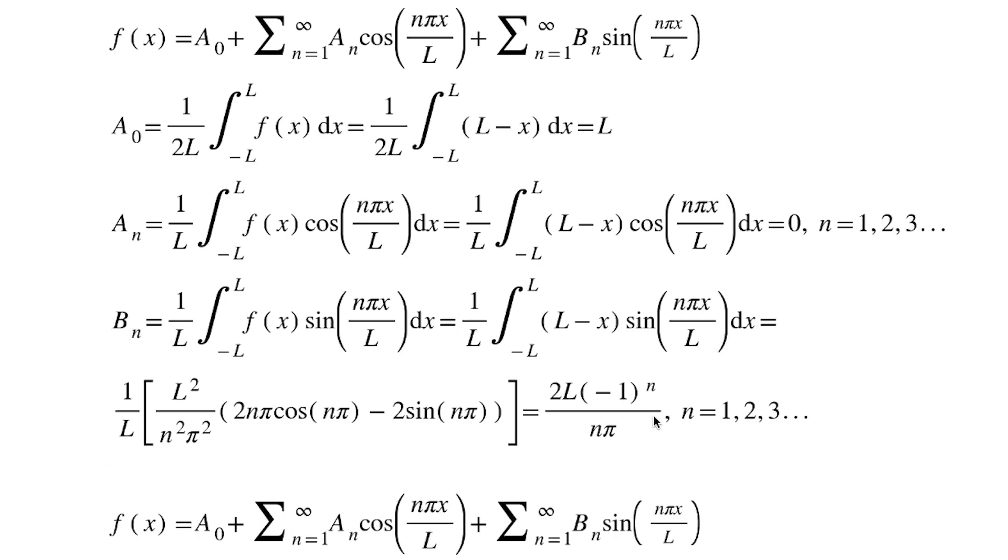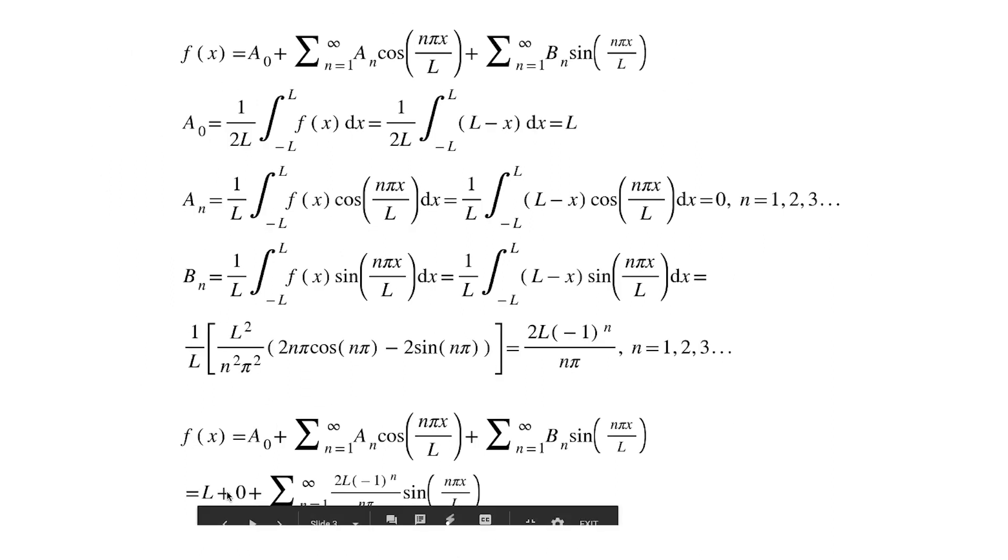So, once you have these three coefficients, just plug them into the equation, the original equation, up here, and you get L plus 0 plus the integral from n equals 1 to infinity of 2L times negative 1 to the n, divided by n pi times sine n pi x over L is your f of x with your Fourier expansion.